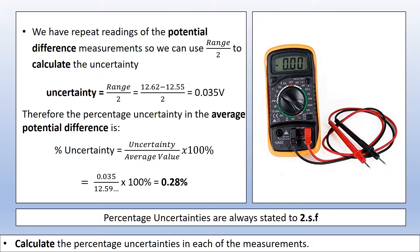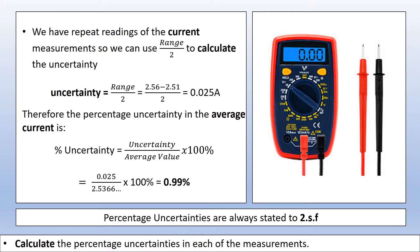For potential difference, we have repeat readings because we recorded it with every single measurement. So I use range over 2 to calculate the uncertainty, getting 0.035 volts. Dividing by the average of all potential differences gives a percentage uncertainty of 0.28% — not a massive contribution. For current readings, we also have repeats throughout, so we use range over 2. Dividing by our average current gives 0.99% — a significant contribution, but still not massive.